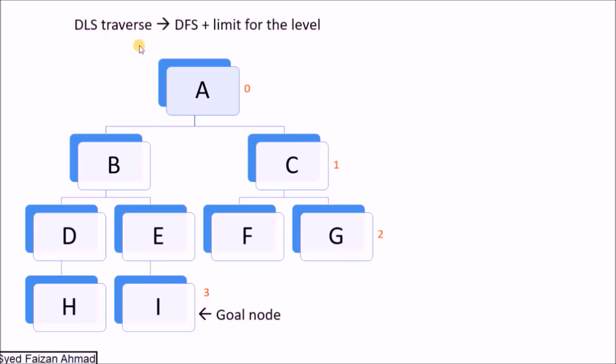DLS traverse means DFS plus limit for the level. Like we have DFS traversing, we traverse root, then left, then right. In the exact same way we will traverse, but with a limit for the level assigned.